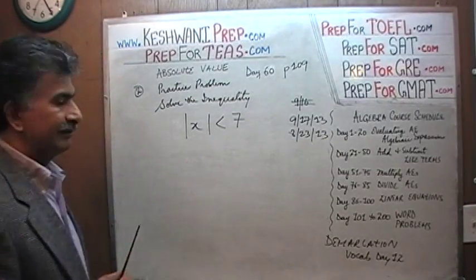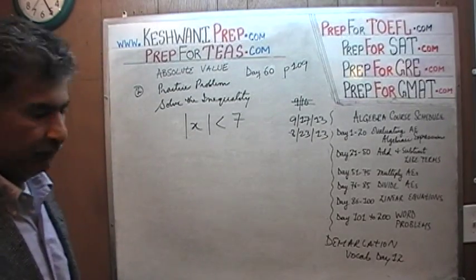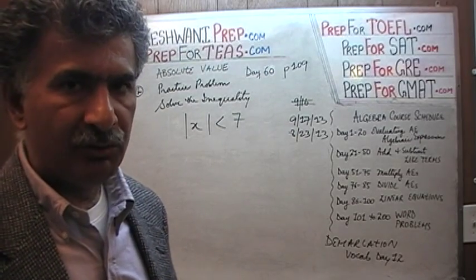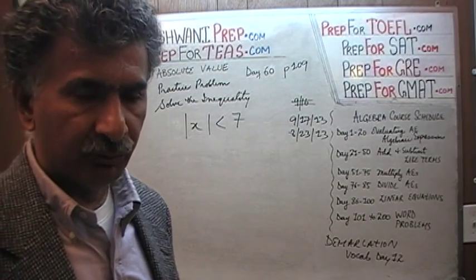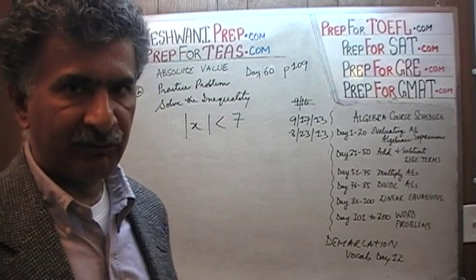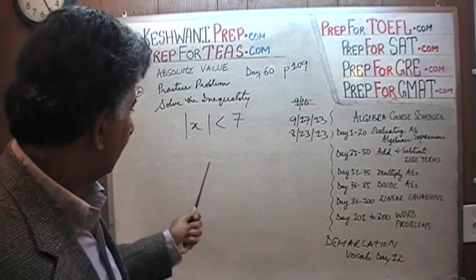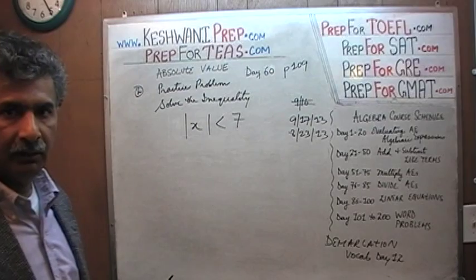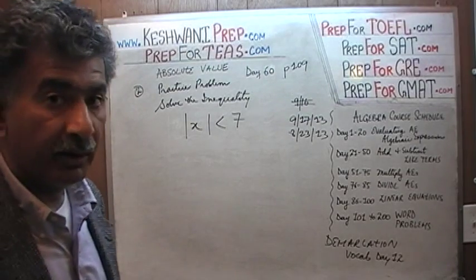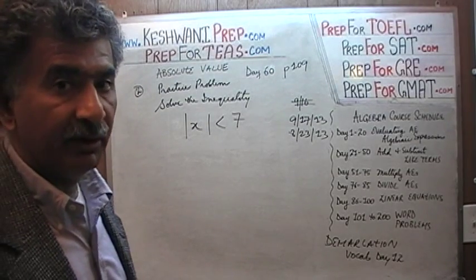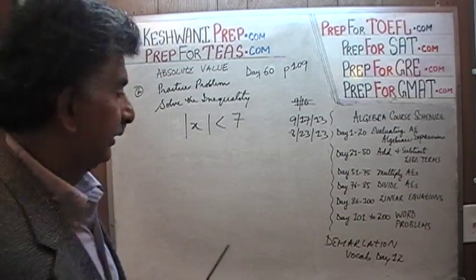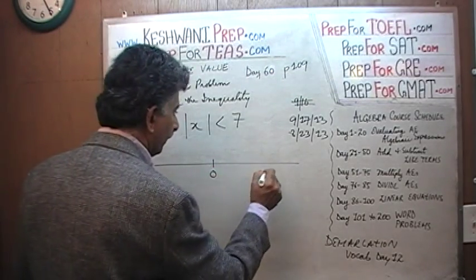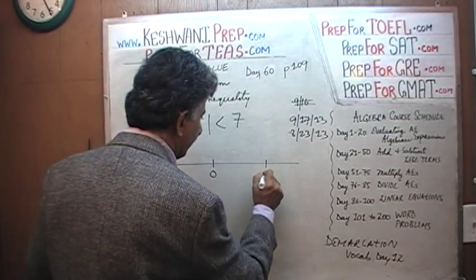Let's try to understand what that means: |x| < 7. The question is — when is that going to happen? What values can x assume that will ensure the absolute value of x is less than 7? Let's take a look at a number line — it will help us understand what's going on. Here's our zero, here's positive 7, and here's negative 7.